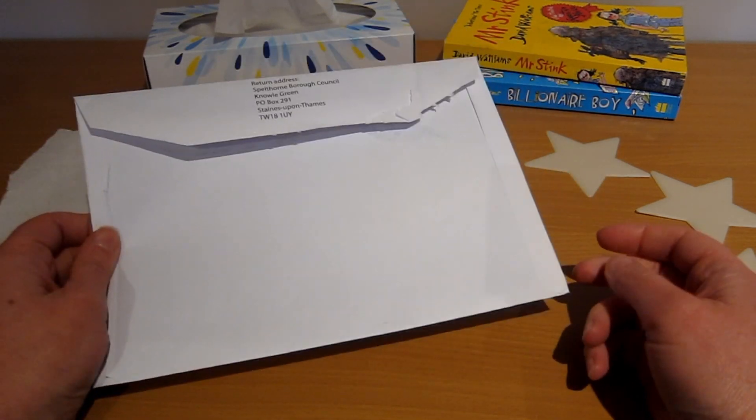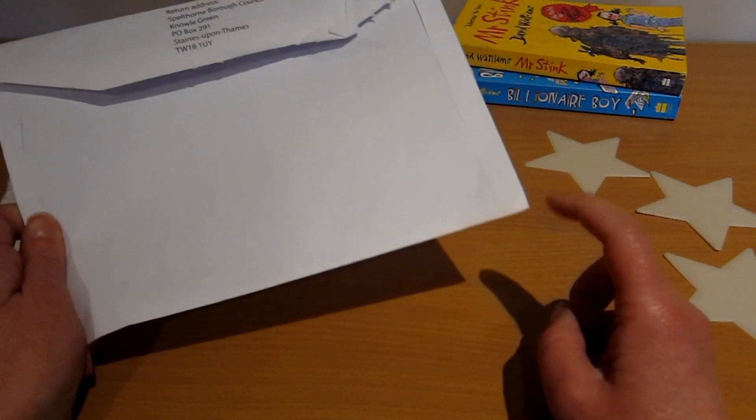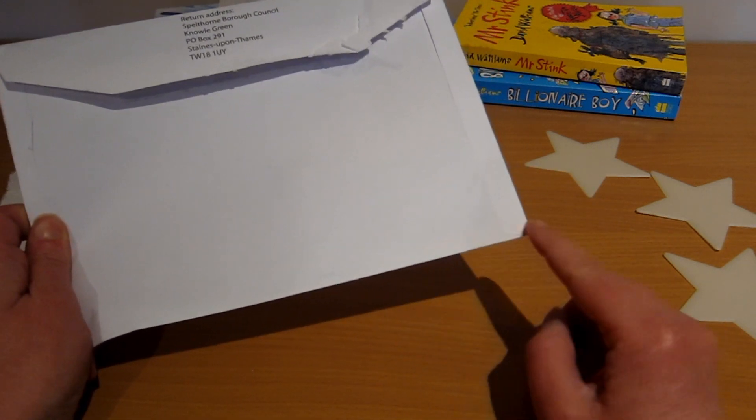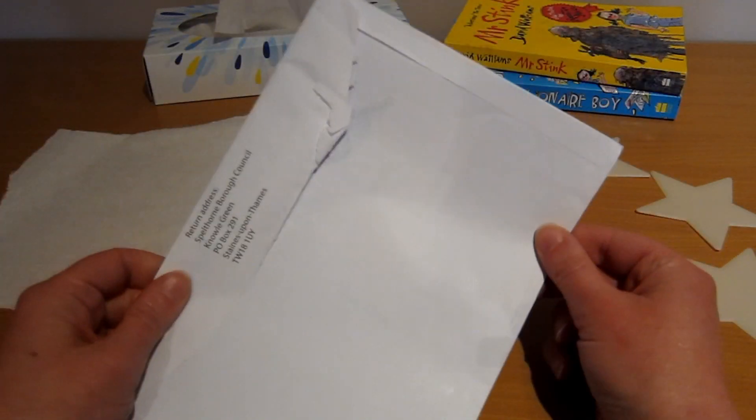If you have an envelope that will do nicely, just ask your mum and dad whether you can use it. Now the corner of an envelope is a perfect right angle so you can use that to measure.